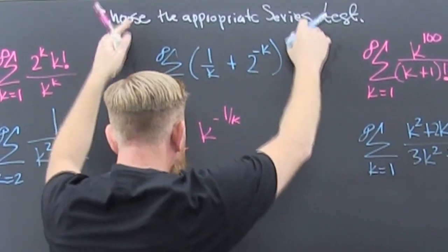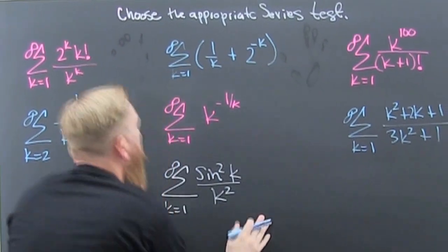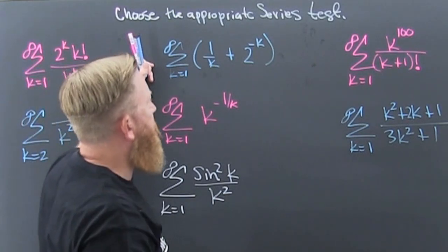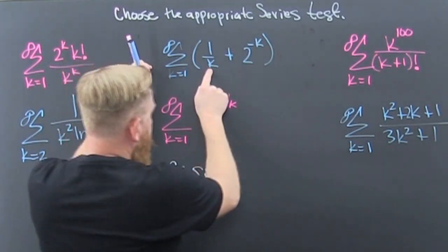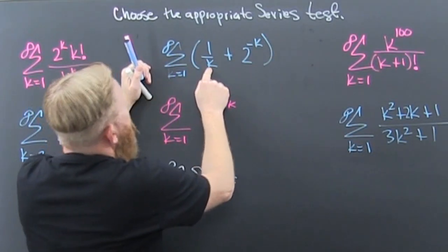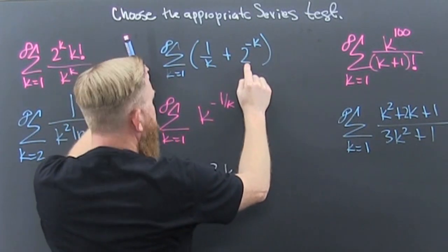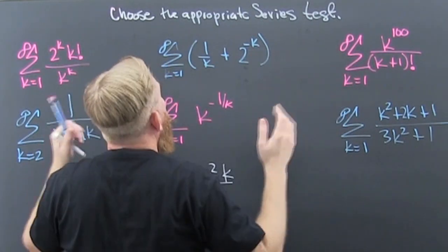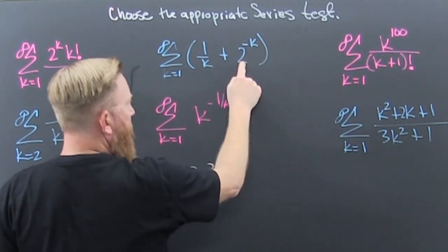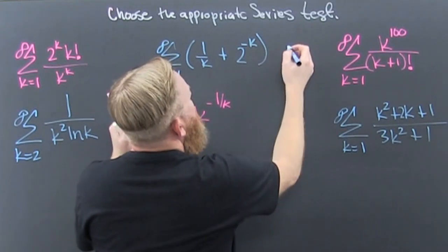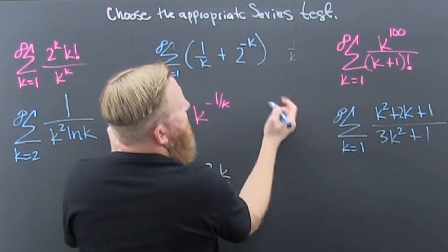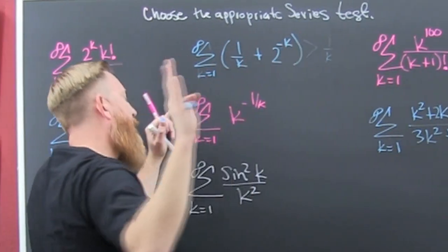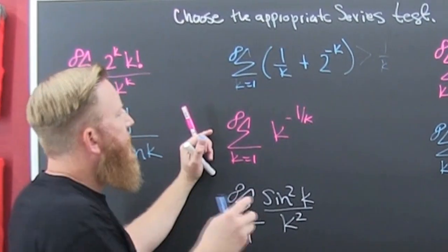I guess we can go down this middle right here. This top one up here, you are probably going to look for the comparison test. Why? Because that's a divergent harmonic and that is a convergent geometric, and you like a divergent and a convergent. I don't know what that is, but this is plus something, so you might want to compare it with 1 over k. Since this one has more added to it, that one's going to be bigger and that's divergent.